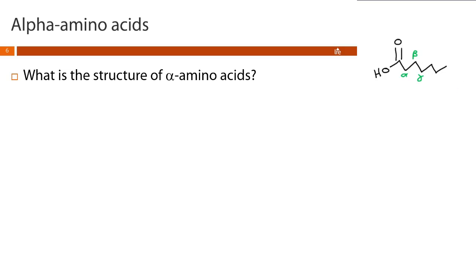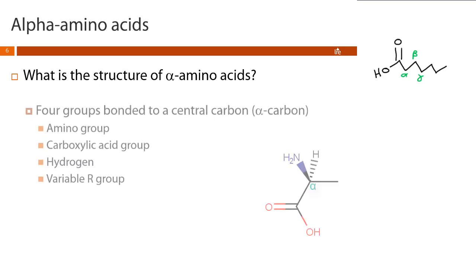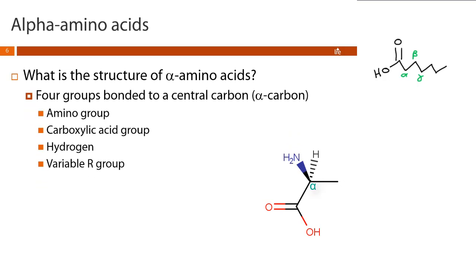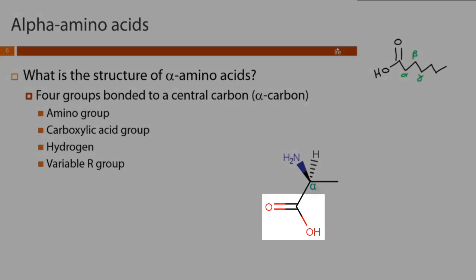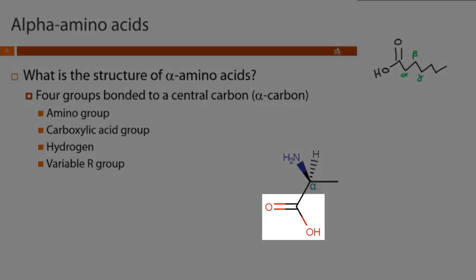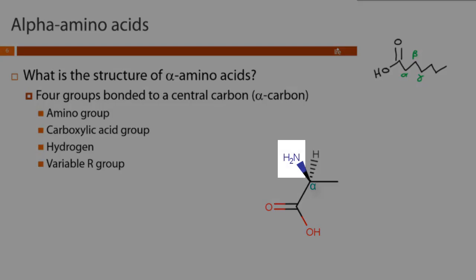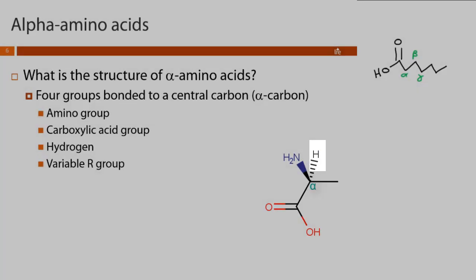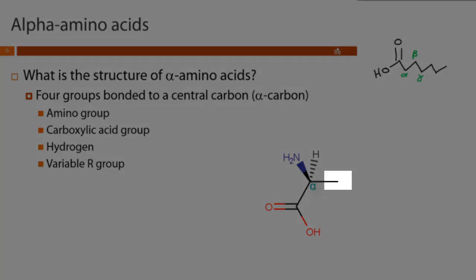All of the 20 standard amino acids are alpha amino acids. That means they're going to have four groups attached to the central alpha carbon: the first one is a carboxylic acid, we're also going to have an amino group attached to the alpha carbon, a hydrogen, and then a variable R group. This variable R group is what's going to give each amino acid its properties — that's how they're going to be different from each other.